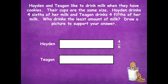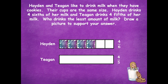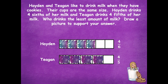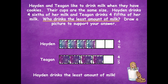Hayden is four-sixths, so we can partition that into six — one, two, three, four parts shaded. And then Tegan has four-fifths, she drinks four-fifths of her milk, so we split that into fifths and shade four parts of it. Now back to our question: who drinks the least amount of milk? The smallest amount of milk would be Hayden, who drinks the least. Because even though they both drank four parts of their milk, Hayden's parts were smaller, so that caused her to have the least amount of milk.